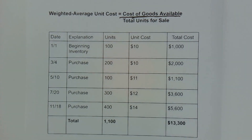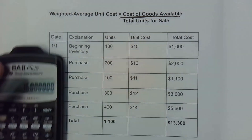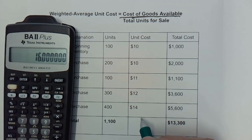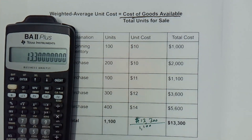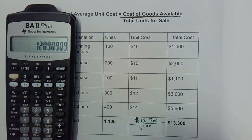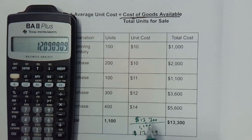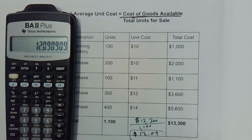I need to divide those two to find the weighted average cost per unit. I'll pull out my calculator — the cost of units available for sale is $13,300, and our total units available for sale is 1,100. So I have 13,300 divided by 1,100, and I get a weighted average unit cost of $12.09.